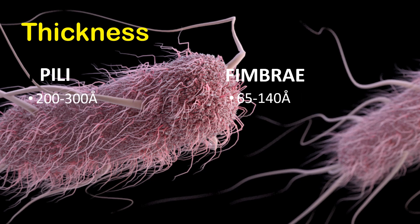In terms of thickness, you can see pili are much thicker structures. In this picture you can see these are much thicker structures. So pili are 200 to 300 angstroms in diameter, whereas fimbriae are 65 to 140 angstroms in diameter.